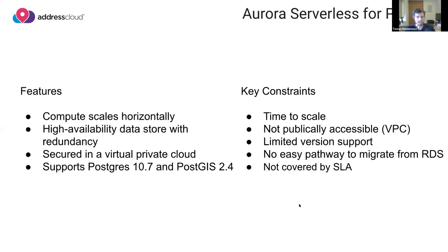There's limited version support — only Postgres 10.7 and PostGIS 2.4 are currently available in serverless mode. There's no easy pathway to migrate data from existing databases; there's no snapshot restore from RDS to Aurora Serverless, so loading data is a streaming process. Amazon also doesn't currently guarantee the serverless offering through an SLA, so there's no guaranteed uptime. There are a lot of benefits, but it's good to understand the potential issues.